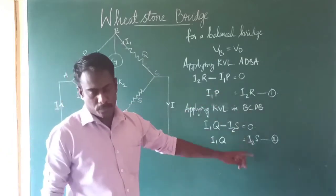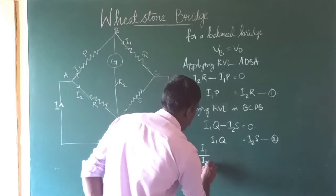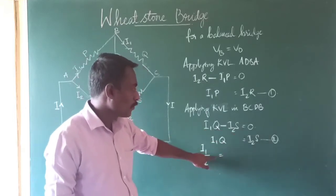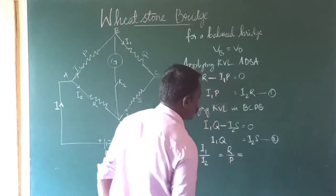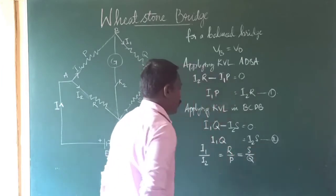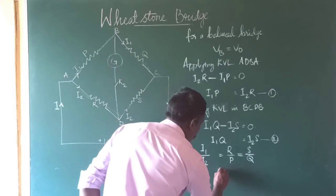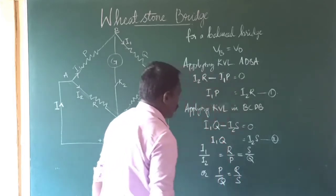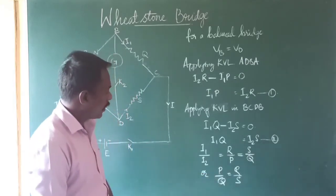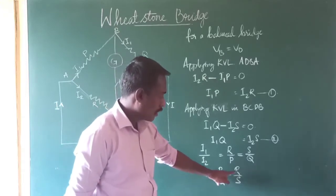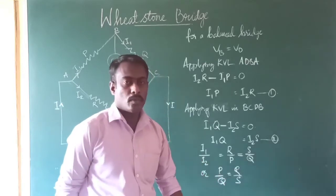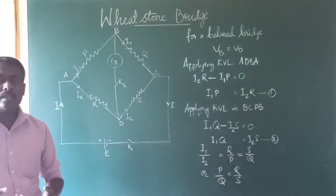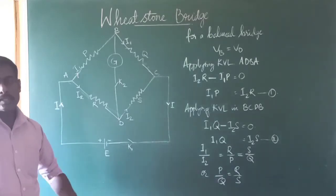From equation 1 and equation 2, taking the ratio of I1 to I2, we get P/Q = R/S. This is the condition for a balanced Wheatstone bridge. If we know the resistance of P, Q, and R, then we can find out the value of the unknown resistance S using this equation. The main purpose of using the Wheatstone bridge is to find out the unknown resistance in a circuit where all other resistors are known.